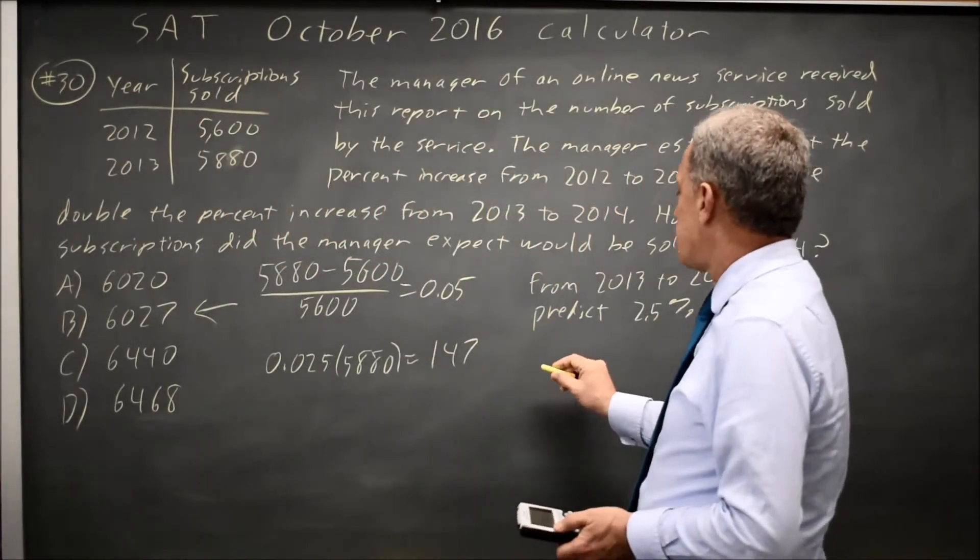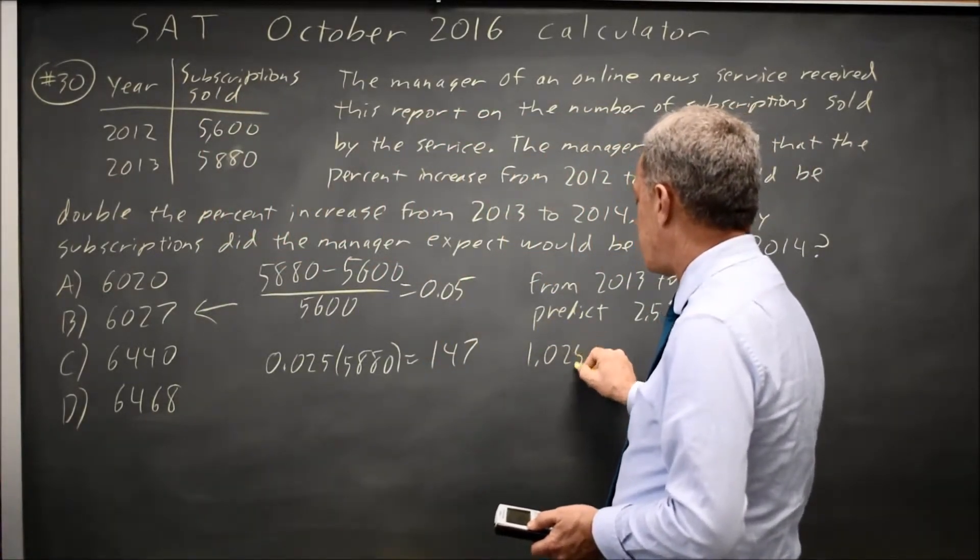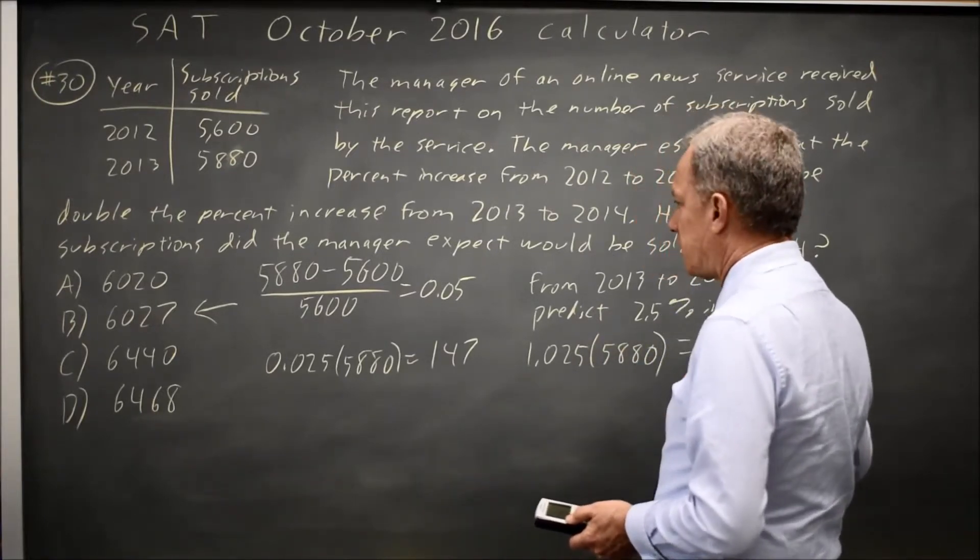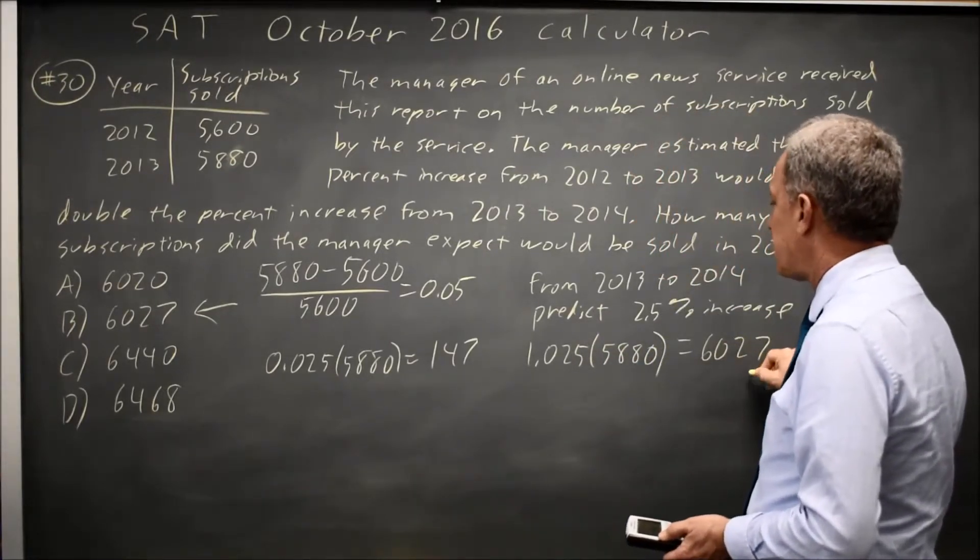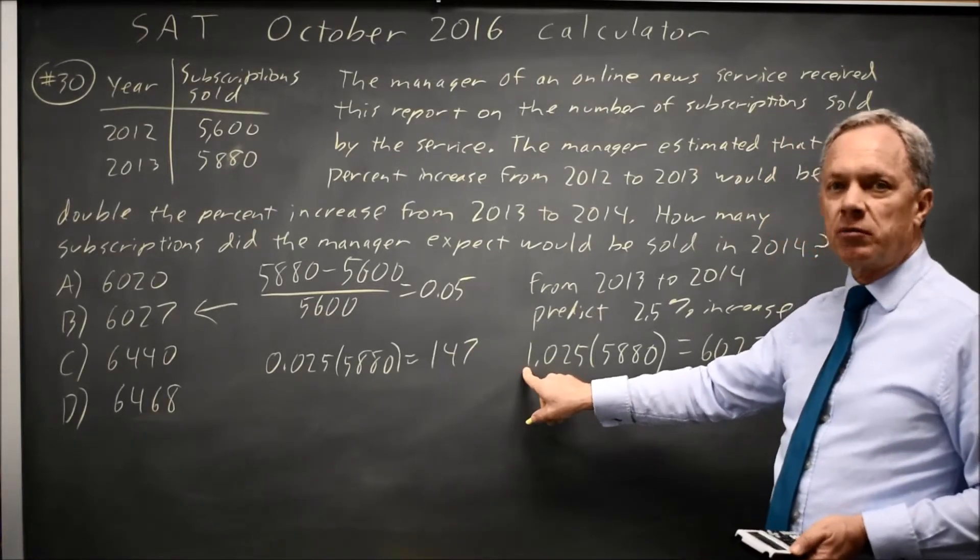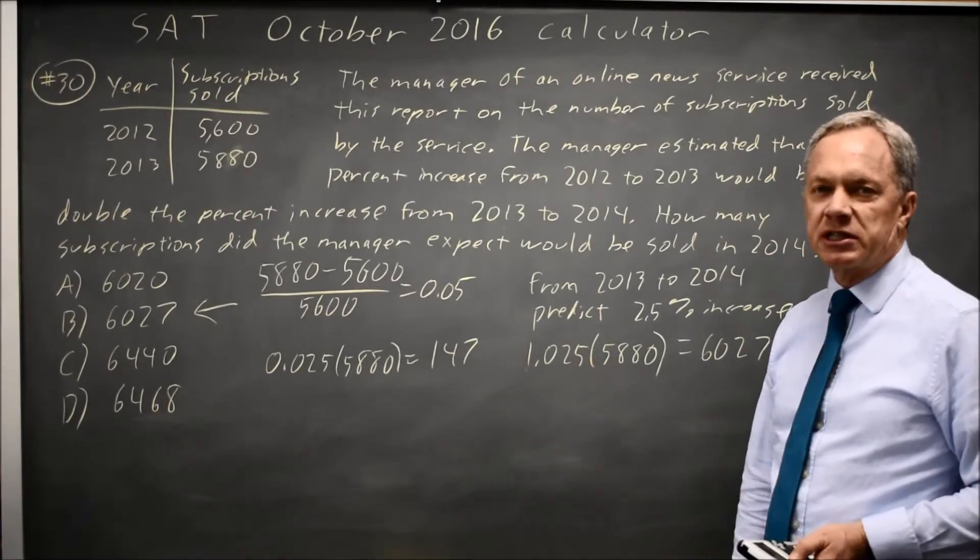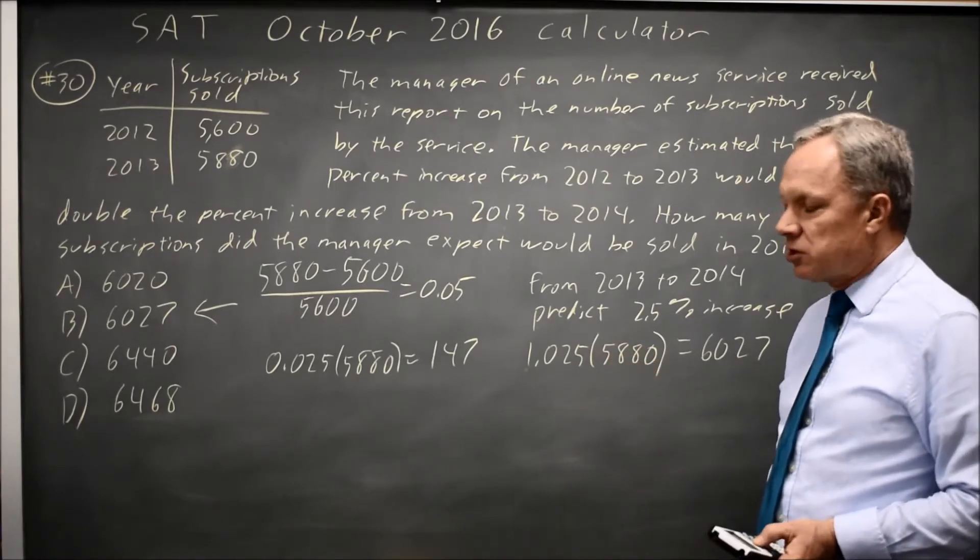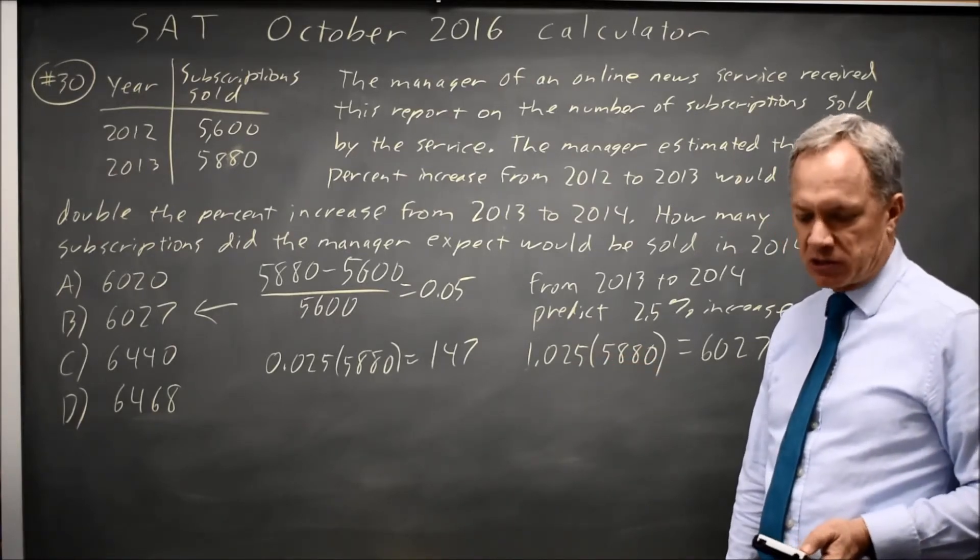Alternatively, we could have taken 1.025 times 5880 and that also gives us 6027 because this is 1 plus 2.5%, so we keep our initial subscriptions and add an additional 2.5% to the number that were sold the previous year.